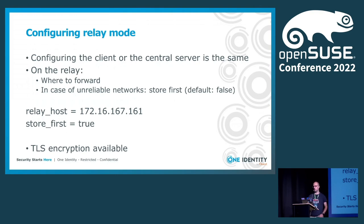There is no difference on the client or the central server side in the configuration. On the relay, you need to configure where to forward session recordings and log messages. If you have unreliable networks, you can also configure to store session recordings first, and once the last bit is recorded by the relay, it tries to forward to the central log server daemon or to the next relay. You can also configure TLS encryption for privacy and security.